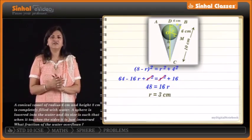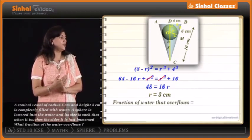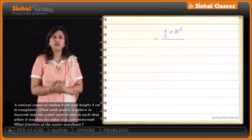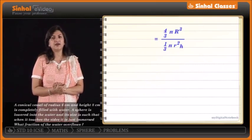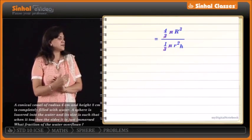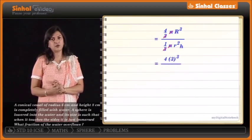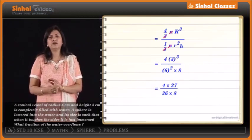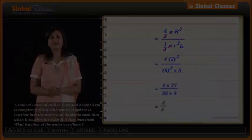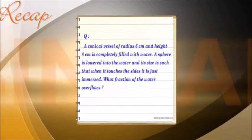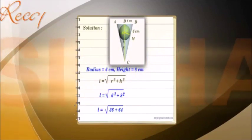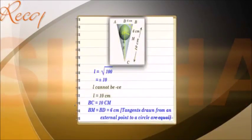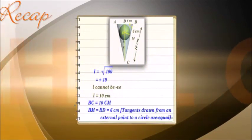We are asked to find the fraction of water that overflows, which is volume of the sphere upon volume of the cone: (4/3)πr³ ÷ (1/3)πR²H. Cancelling 3 and π, and substituting values: 4 × 3³ / (6² × 8) = 4 × 27 / (36 × 8) = 108 / 288 = 3/8. The required fraction is 3/8.